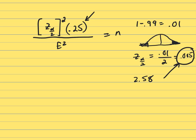So just plug in the numbers that you know. This will be 2.58 squared times 0.25, and the margin of error in the problem is 0.03, so that's just 0.03 squared. And I use my calculator and I got 1.849.